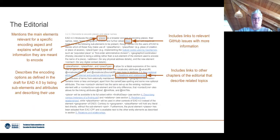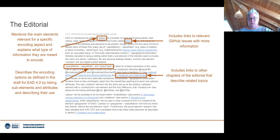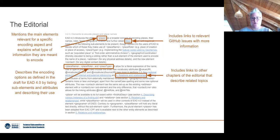For example, if you want to better understand how places and place names will be encoded in the new version, you can go directly to that chapter. Each chapter mentions the main elements relevant to its specific context, explains what type of information they encode, and includes information about sub-elements or attributes available in that context. Most chapters also link to a more detailed GitHub issue and to related chapters within the editorial.